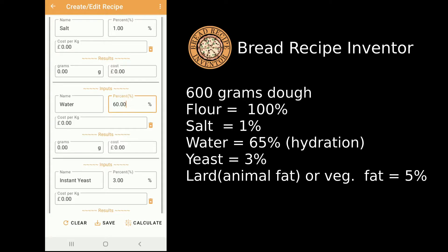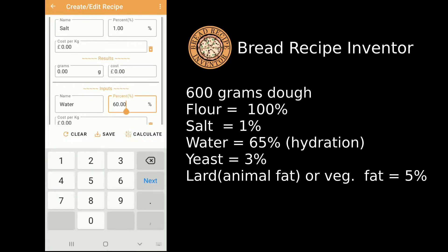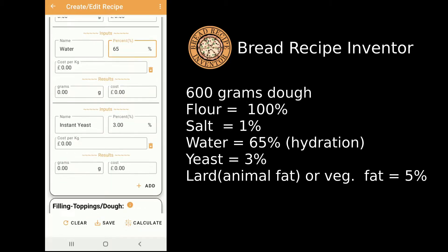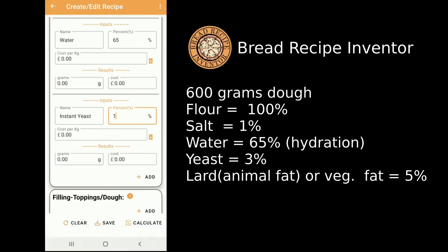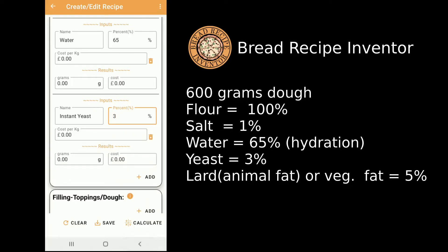The 60 grams of water also symbolizes the hydration of the dough, so 60 percent means 60% hydration. If we want 70%, that will be 70% hydration. So let's make this one 65% hydration. The last ingredient is the yeast — I'm going to use three percent because I want to make the dough a little bit faster.